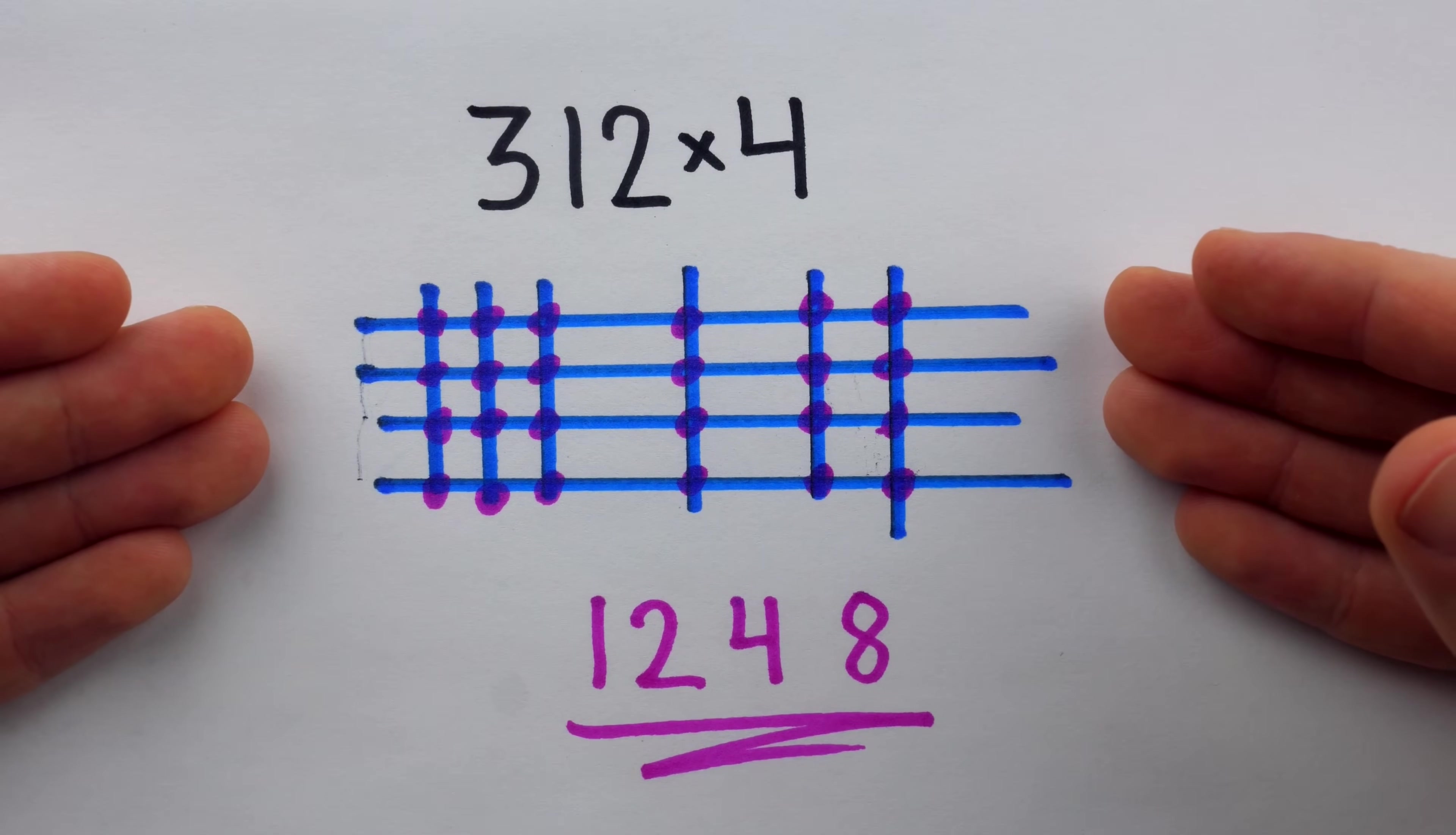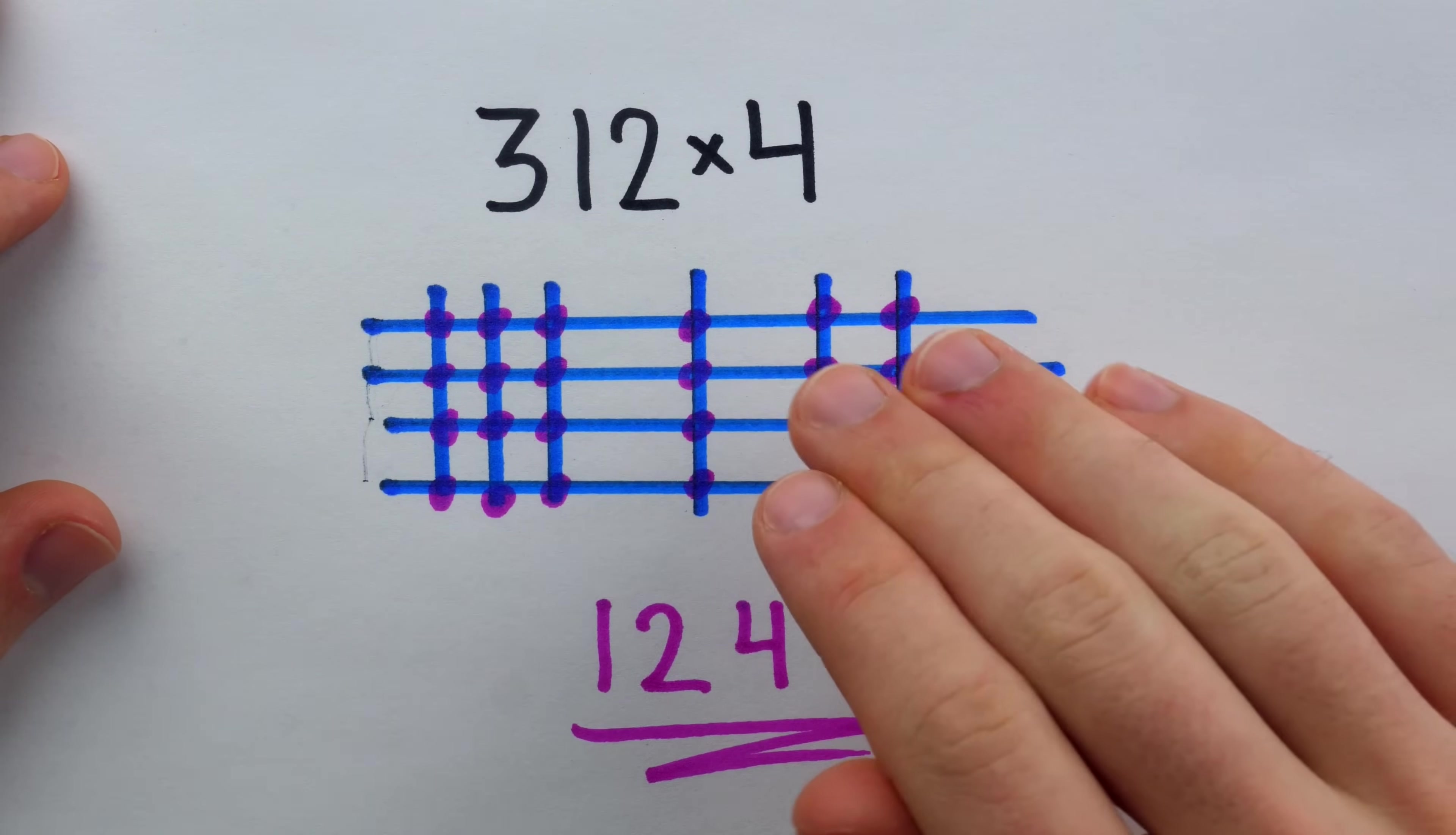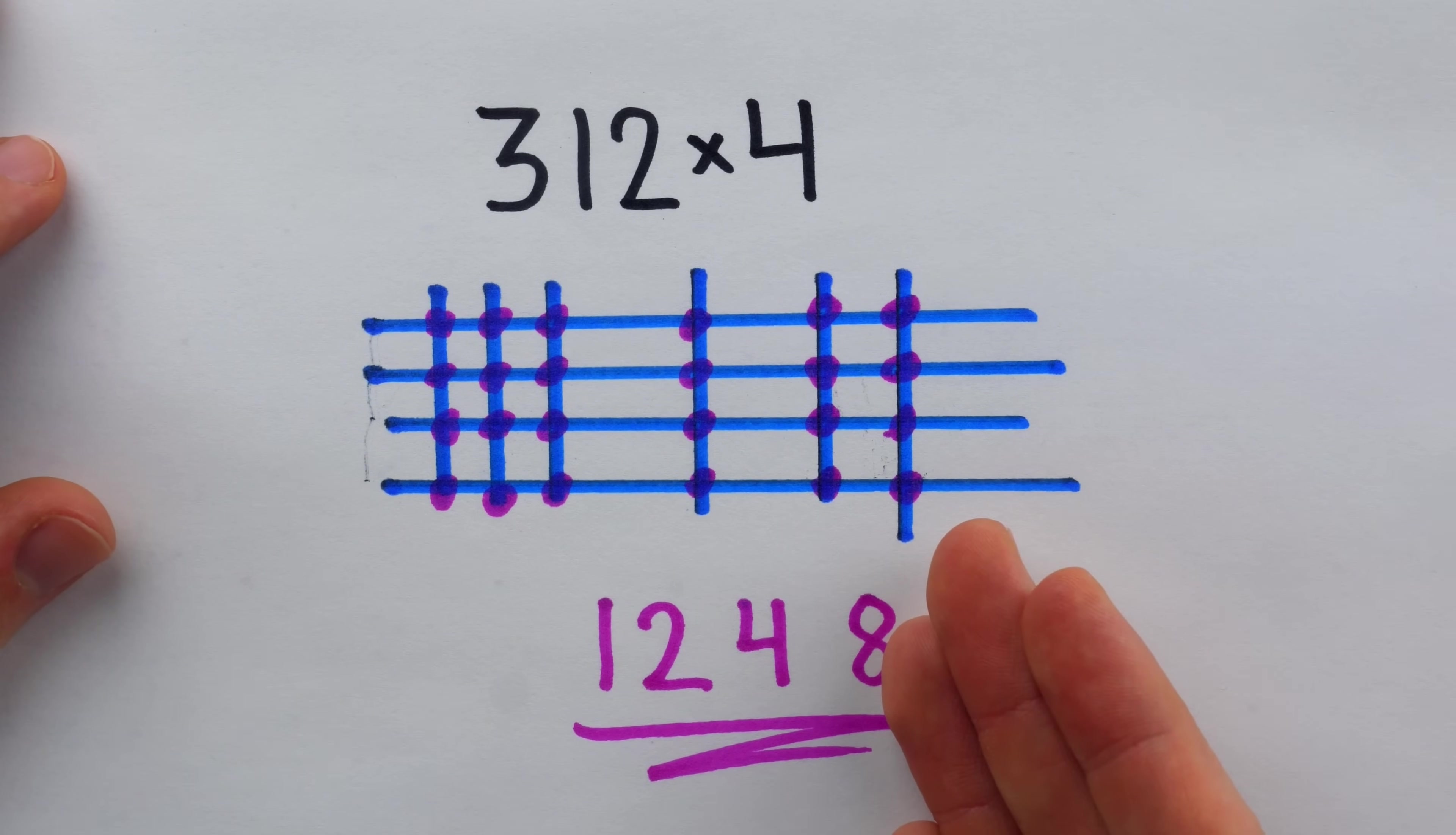After seeing me do it once, you can probably already imagine one reason why, which is that this method of multiplication is just not particularly efficient. But furthermore, although there are very simple mathematical facts underlying why this method works, and indeed it does work, it doesn't always work out as simply as it did in this example.